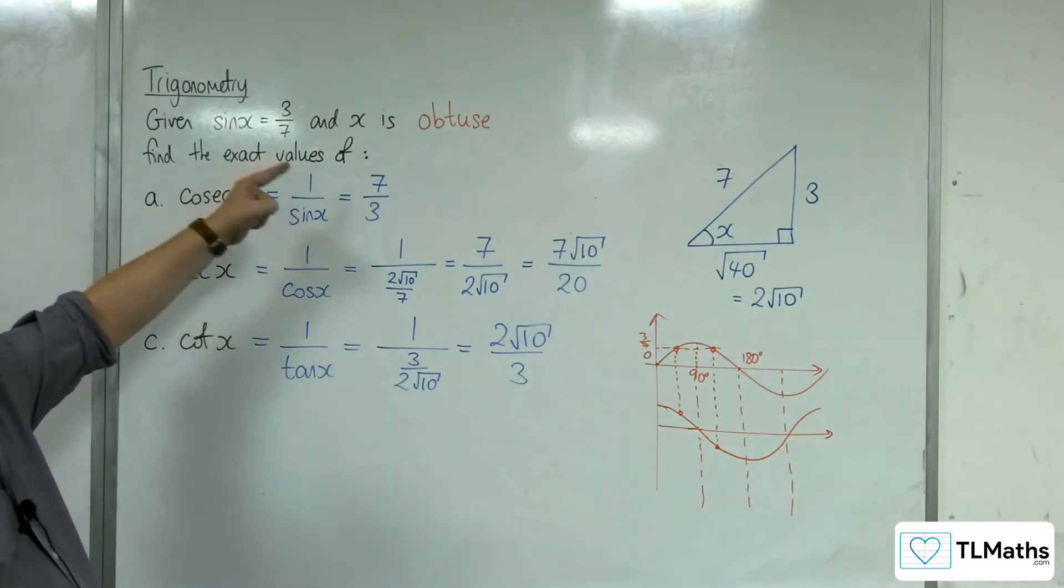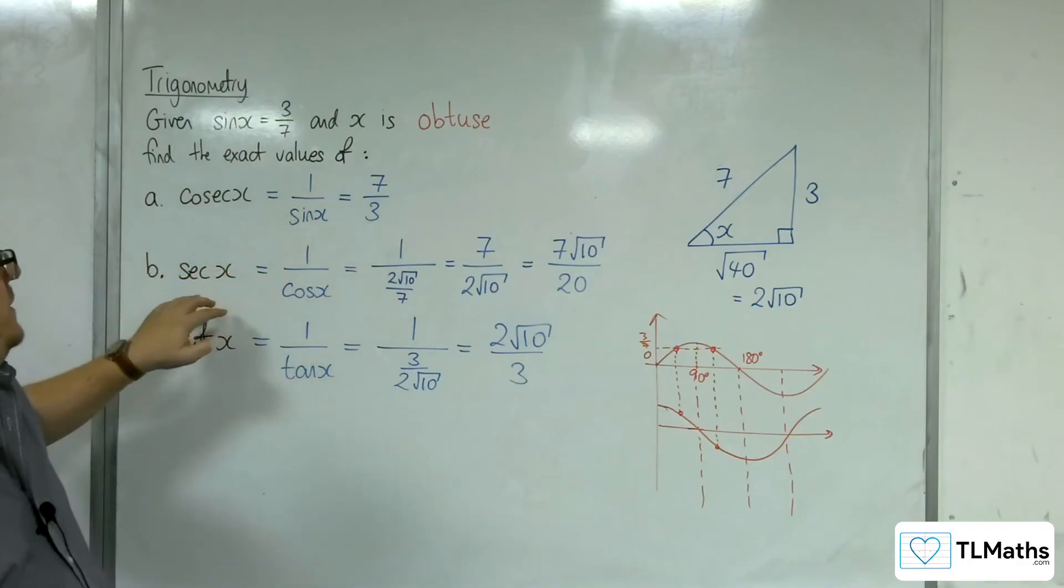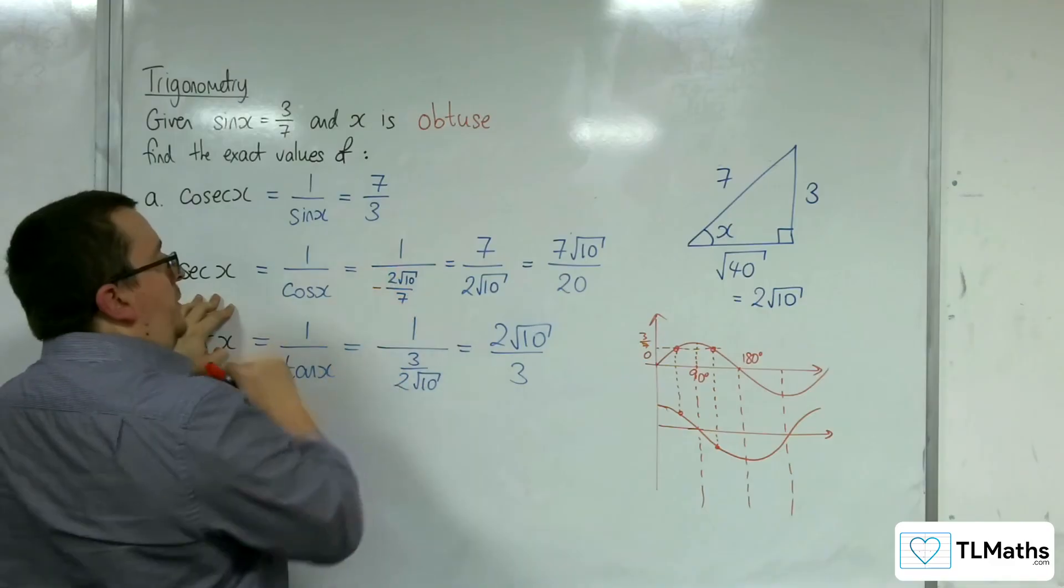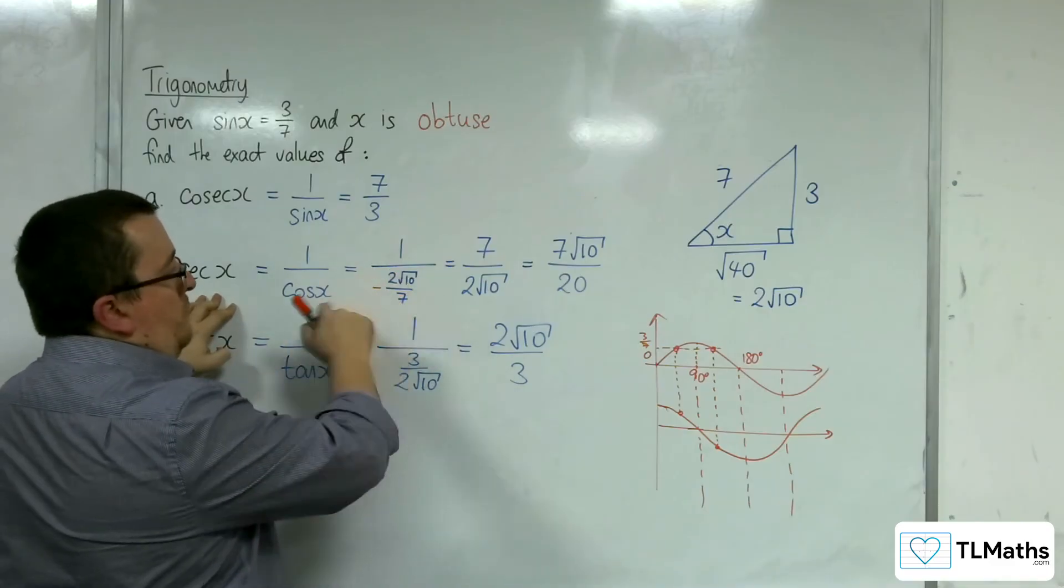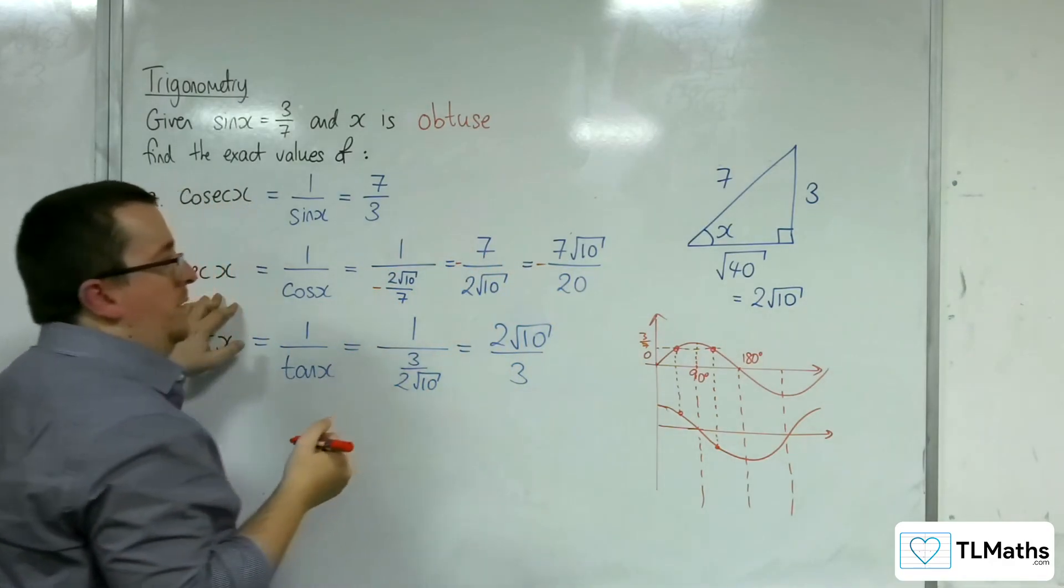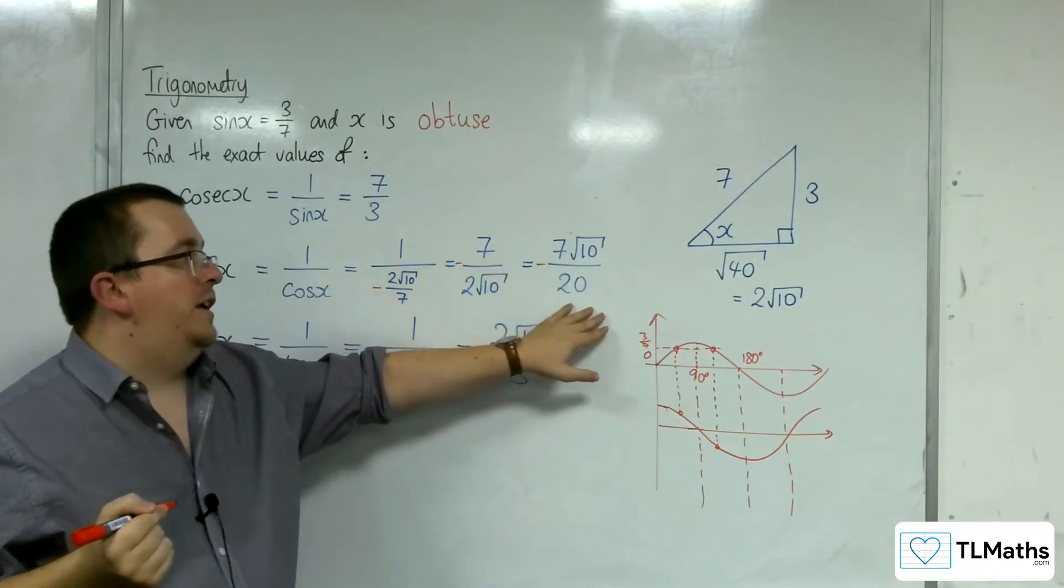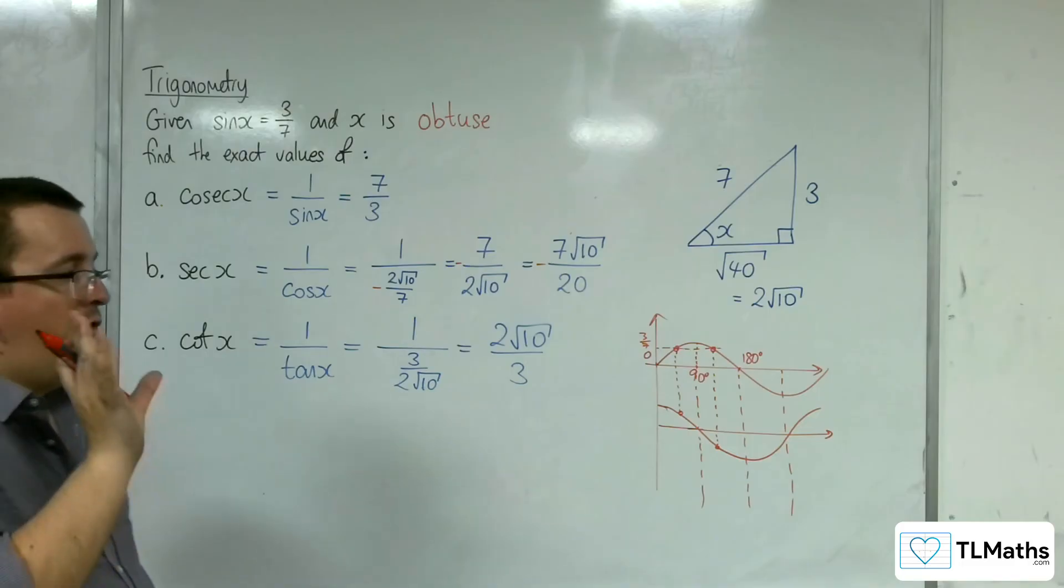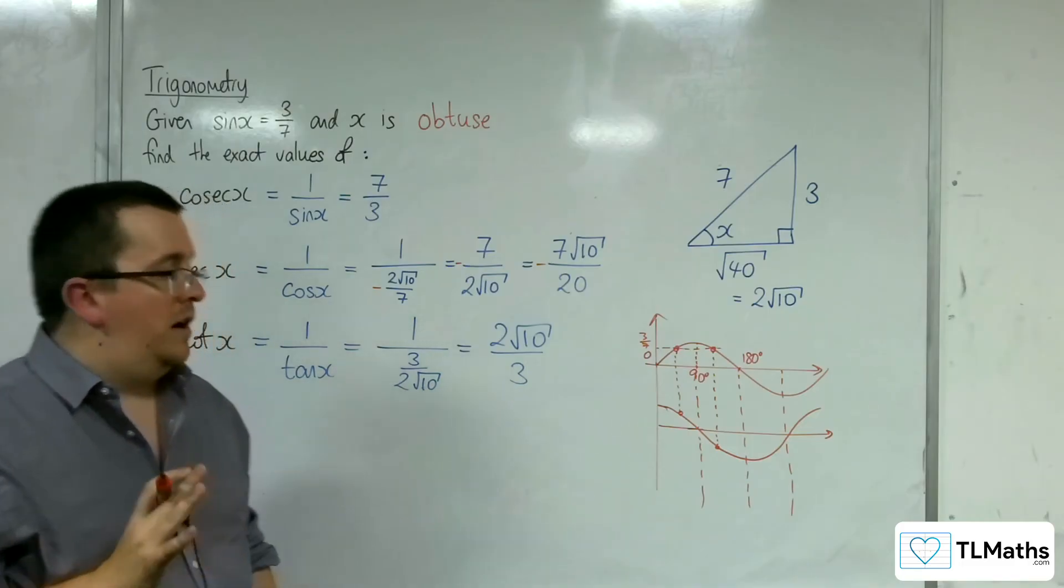If x were obtuse, then sec x should actually be -7/(2√10), or -7√10/20. So it changes sign depending on where you are.